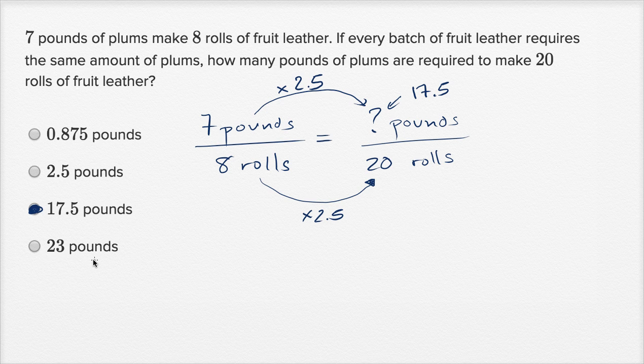So we wouldn't want 23 pounds of plums if we make 20 rolls of fruit leather. This is more than 20. And if we're making more rolls than we were able to make with the seven pounds, we're not going to require fewer pounds there. So you could have actually ruled out all of them just based on the logic to get to 17.5.